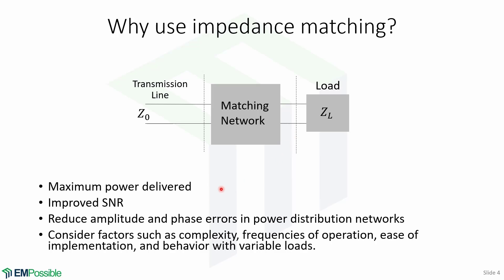Impedance matching is important for the following reasons. First, we want the maximum power delivered to the load, and this is achieved when the load is matched to the line. The second point is improved signal-to-noise ratio, which is very important for sensitive components such as antennas and amplifiers. The third point is to reduce amplitude and phase errors in power distribution networks such as an antenna array feed network.